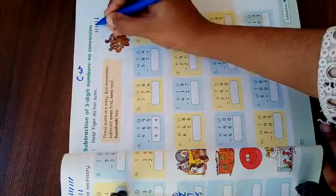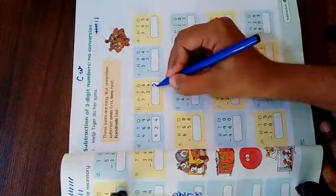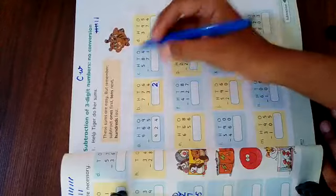How many remaining? One, two. Two is remaining. We will write it down. Okay, son.